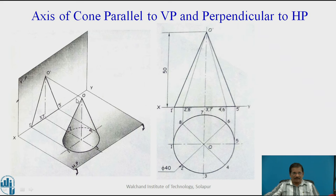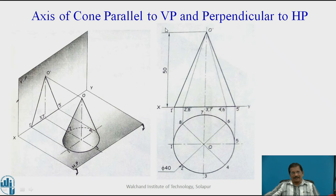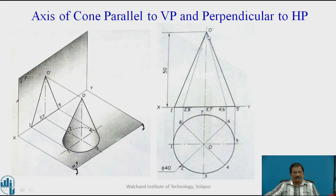Now this is a cone. Again, the axis is perpendicular to HP and parallel to VP. In this case, you have to specifically show the apex as O. The top view will again be a circle, so draw a circle of 40 mm diameter. Divide the circle into 8 or 12 parts and project it upwards to get points 1', 2', 3', 4', 5', 6', 7', and 8'. As this is a cone like a pyramid, it will have an apex, so join the apex to each point: O'-1', O'-2', O'-8', O'-3', O'-7', O'-4', O'-6', and O'-5'. The front view will show an axis length of 60 mm, and the top view is the base circle. The procedure is similar to the cylinder, except here there is an apex, whereas in the cylinder there are two parallel lines at the axis length.